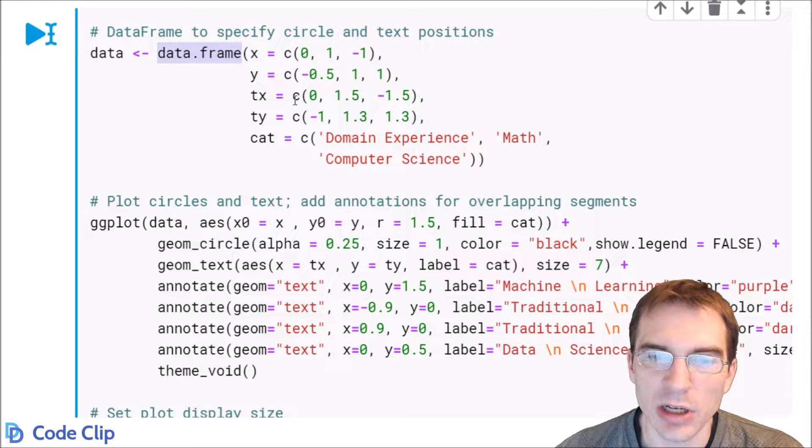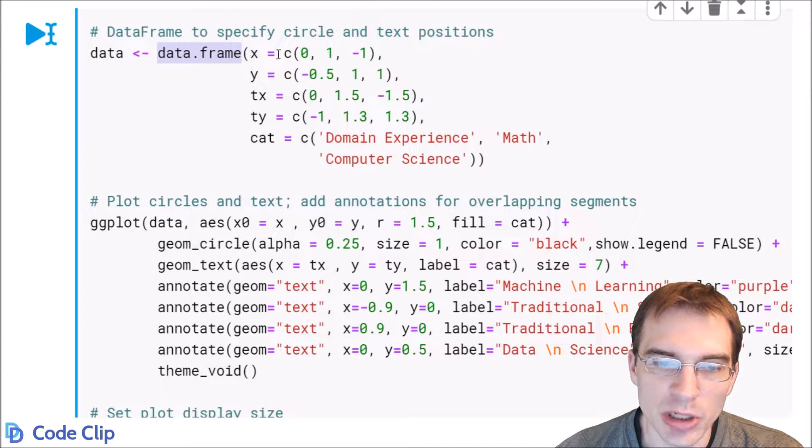We're saying we're making a data frame. We want three circles for this Venn diagram, so it's going to be a three-category diagram, and we want these circles to appear at these coordinates.